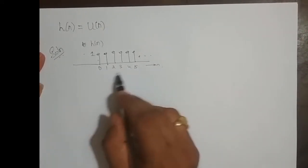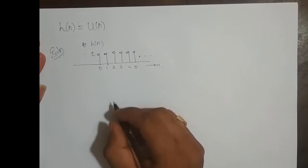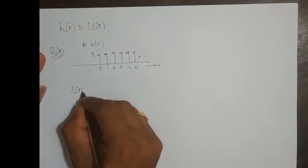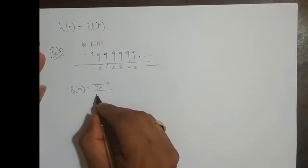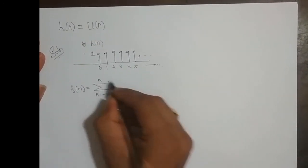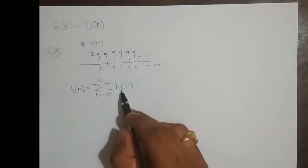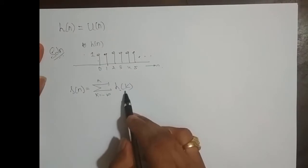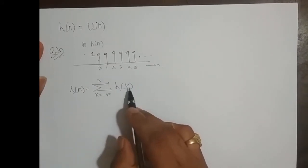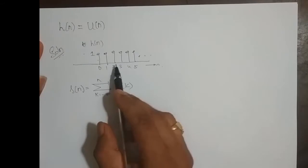I have to write it in terms of k. The independent variable has to be written in terms of k. What is the formula for step response? S of n is the summation k varying from minus infinity to n of h of k. Since in the formula we have the impulse response in terms of k as the independent variable, I will change h of n to h of k.